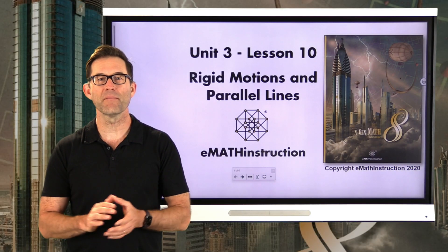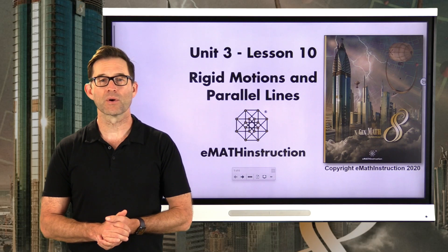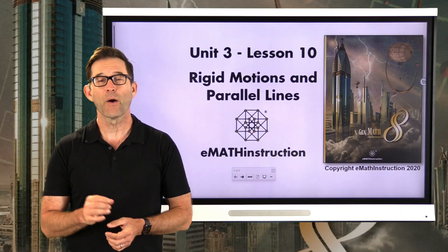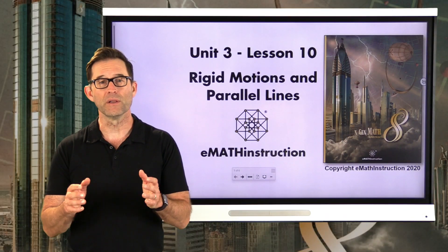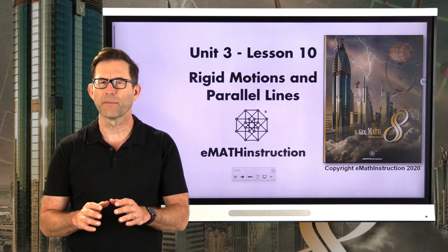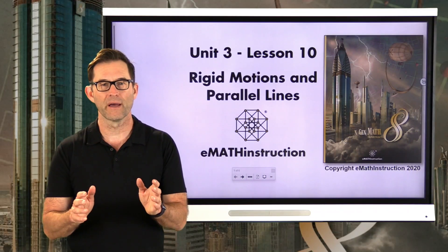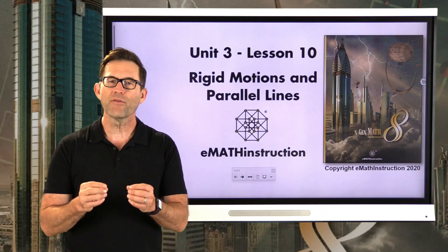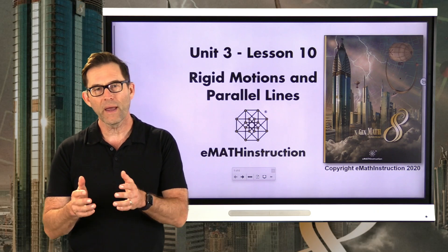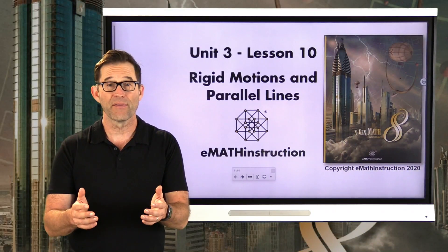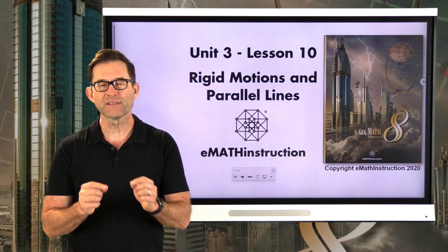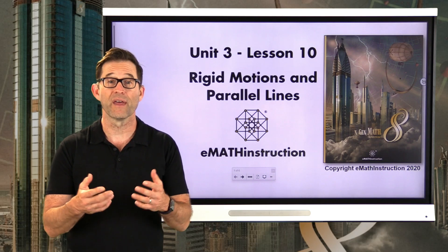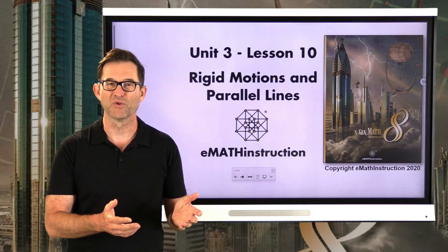Hello and welcome to another NGen Math 8 lesson by EMath Instruction. My name is Kirk Weiler and today we'll be doing Unit 3, Lesson 10 on Rigid Motions and Parallel Lines. In our last unit we had a few lessons on parallel lines where we talked about different angles formed by parallel lines and their relationships. But we never really explained why those angle pairs had to have the relationships that they did. In this lesson we're going to look at how we can justify that certain angle pairs are congruent — i.e. they have the same measure — by using rigid motion properties.